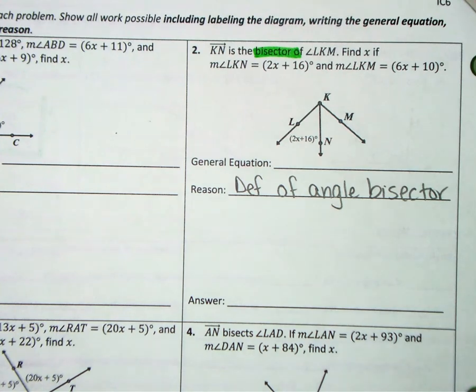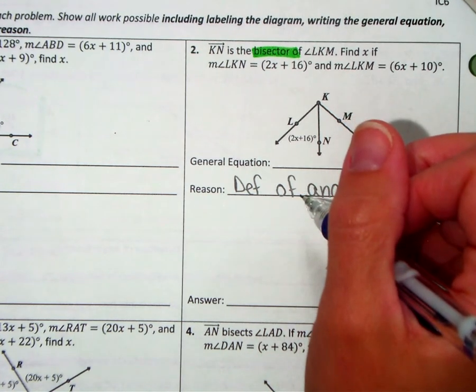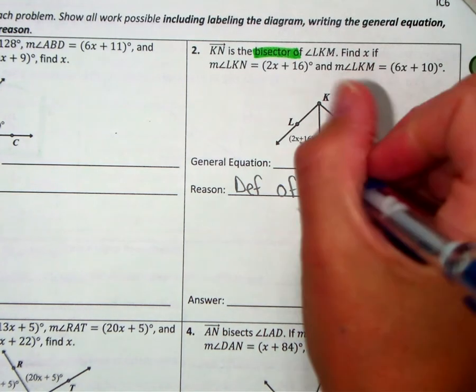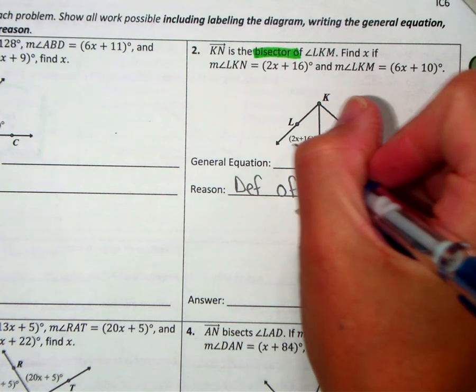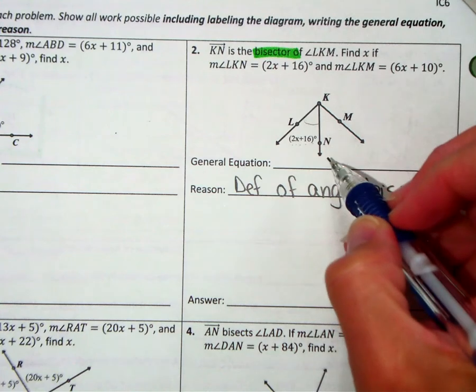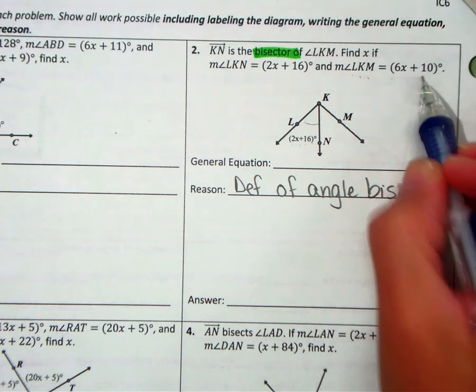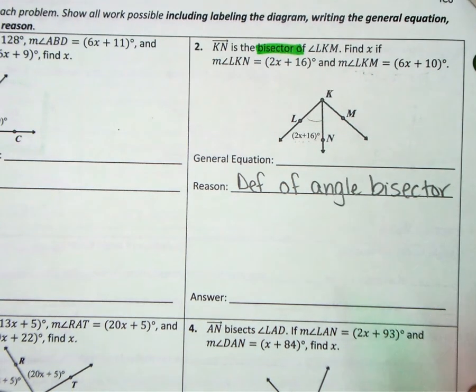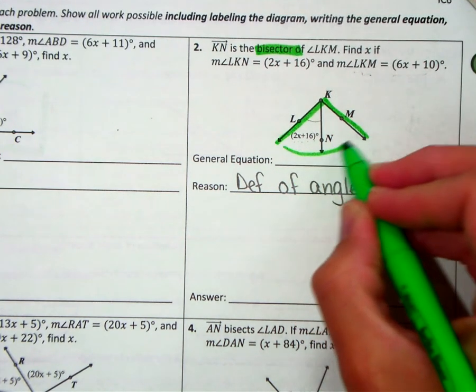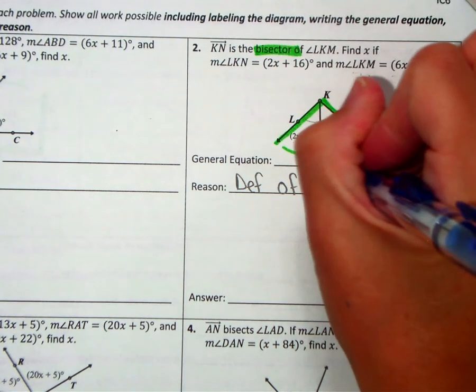So what I have in this equation is I have—or in the picture here—I have this 2x plus 16. I have that, that's just this side of it. And then I have LKM, which if I highlight LKM, I see that that is the whole thing. LKM, that's this whole part, that is my 6x plus 10.